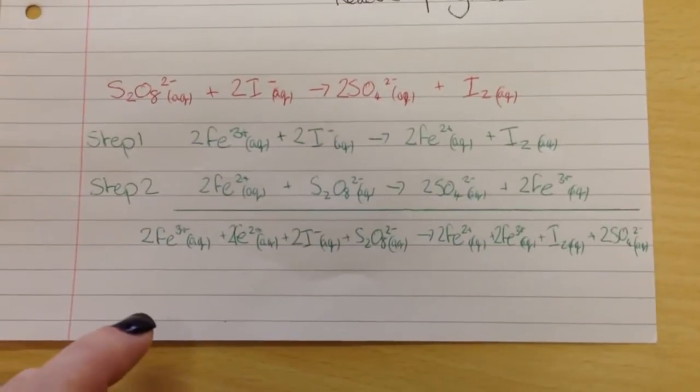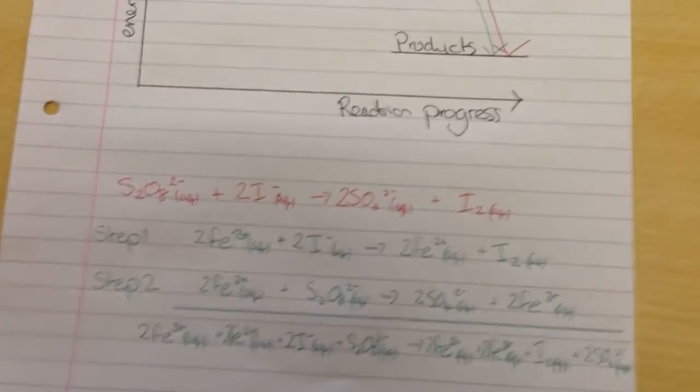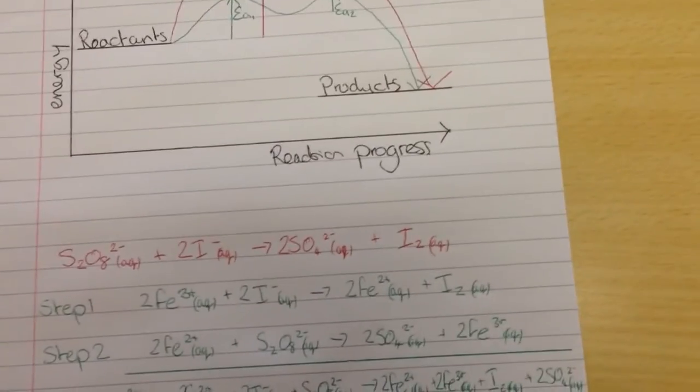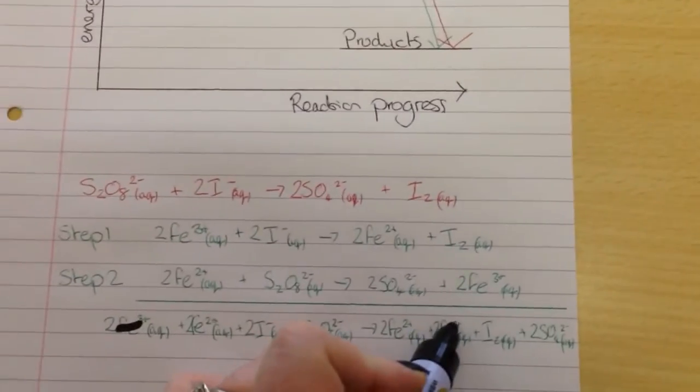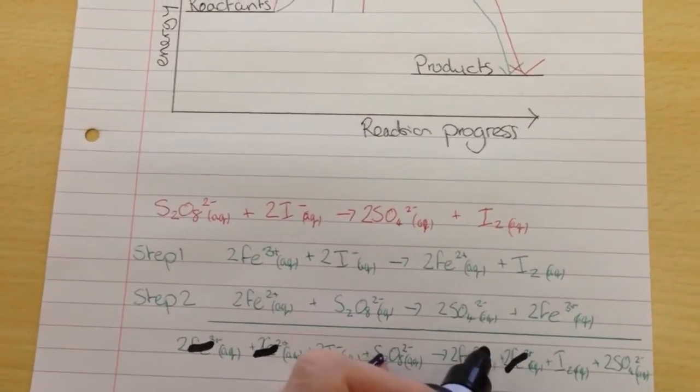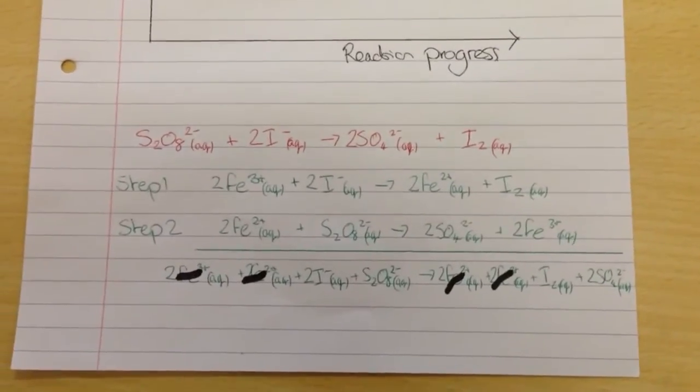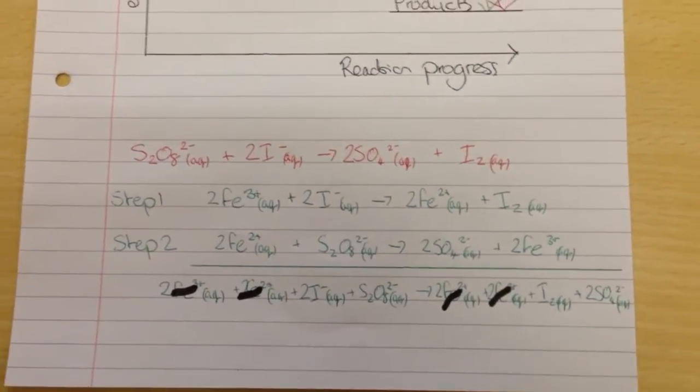We can mark the overall equation together like this. And because we have iron three-plus here and we have iron three-plus here, we can get rid of it. Because we have iron two-plus here and we have iron two-plus here, we can get rid of it. And we are left with our original equation for the reaction taking place.